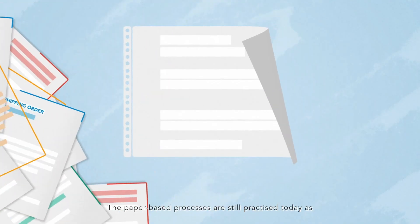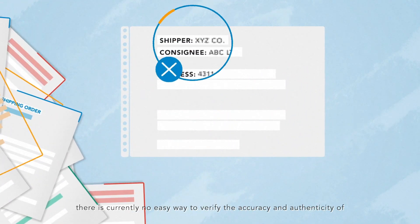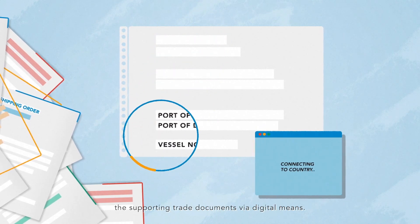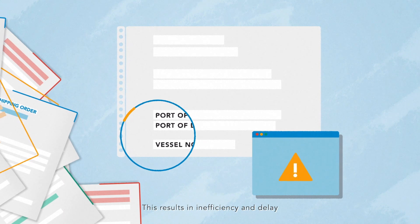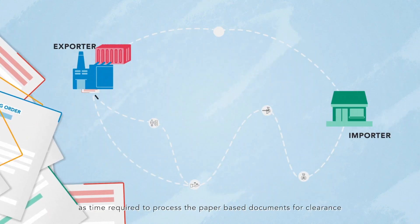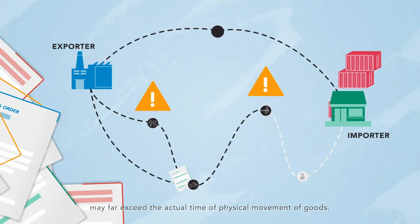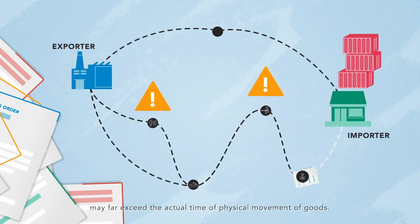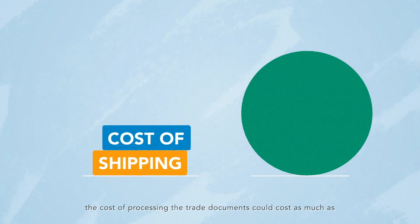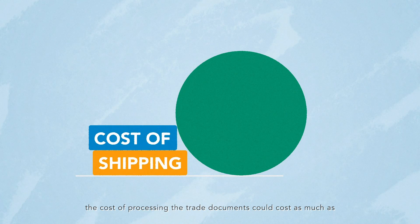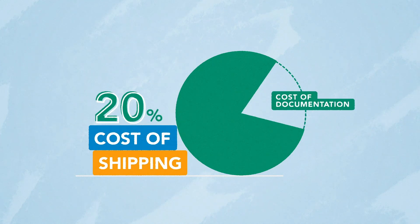The paper-based processes are still practiced today as there is currently no easy way to verify the accuracy and authenticity of the supporting trade documents via digital means. This results in inefficiency and delay, as time required to process the paper-based documents for clearance may far exceed the actual time of physical movement of goods. According to Maersk and IBM research, the cost of processing the trade documents could cost as much as one-fifth of the physical transportation cost.